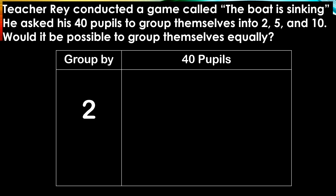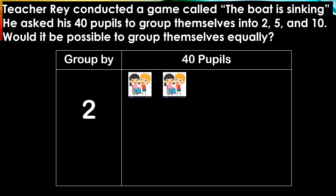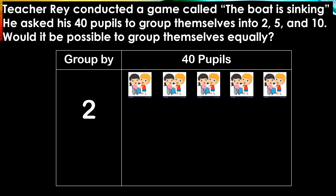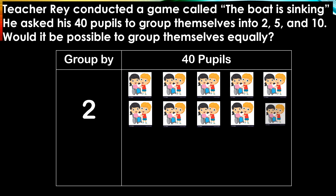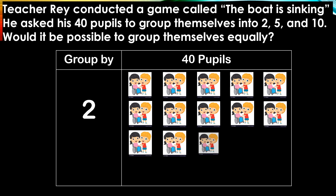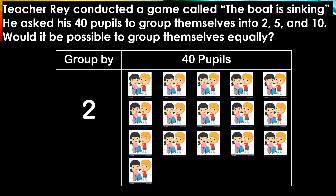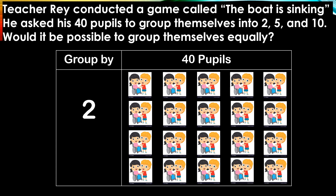Let us group the 40 pupils by 2's. Counting by 2's: 2, 4, 6, 8, 10, 12, 14, 16, 18, 20, 22, 24, 26, 28, 30, 32, 34, 36, 38, and 40. If we count the number of groups, we have a total of 20 groups of 2's. Meaning, 40 is divisible by 2.